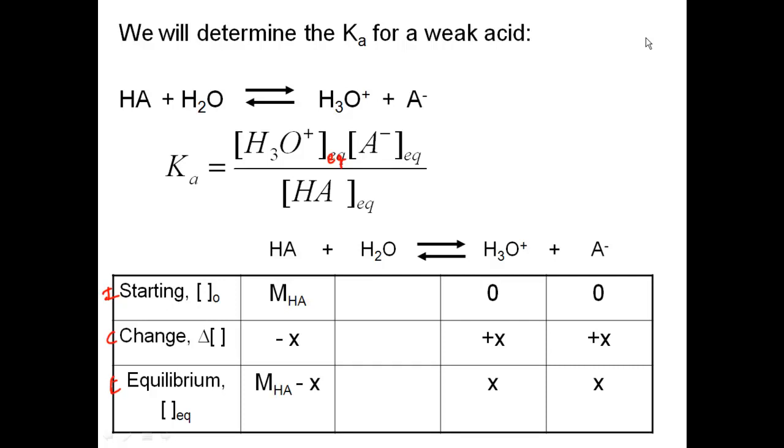So, we're going to write our equilibrium out and set up our ice table. Our initial, our change, and our equilibrium values. We start off, we know the concentration of our initial acid. We have no hydronium and no A minus to start with. So, we know, since there's no products, that this reaction is going to have to go to the right, which means I'm going to have minus on my change for my HA, and I'm going to have pluses on my changes for my products. I need some relationship, everything's one to one, so I'll say I'm going to change an X amount of HA. That would mean that I'm going to produce X amount of hydronium and X amount of A minus. I add those up, I get my equilibrium concentrations, which is my molarity minus X, X for hydronium and X for A minus.